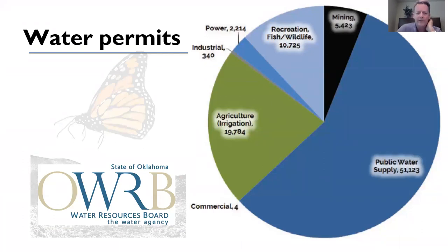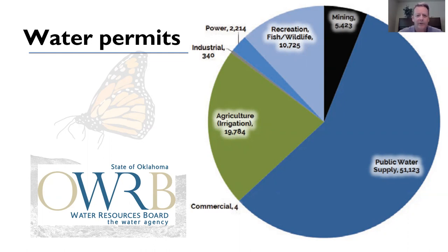Looking at water uses across the aquifer, public water supply is more than 50% of permitted uses. There's a little bit of irrigation, mostly dry-land farming, with some groundwater and surface water irrigation. Very little industrial use, a bit for the power industry, a significant amount for recreation and wildlife, and some for mining — mainly for washing gravel. I'll talk about the mining industry more later.